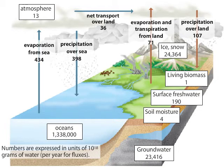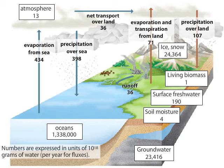Excess water that precipitates on land returns to the oceans via rivers, coastal runoff, and subterranean flows. As this water returns, it completes the hydrological cycle.